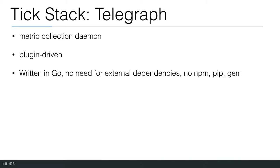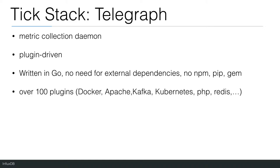Telegraf is written in Go, which means it's compiled into a standalone binary that can be executed on any system with no need for external dependencies — no npm, pip, jam, or other package management tools are required. With over a hundred plugins already written and available, it's easy to start collecting metrics from your endpoints.